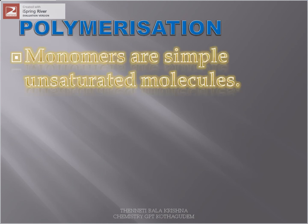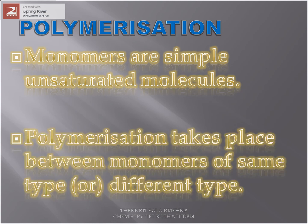The monomers are simply unsaturated molecules. Unsaturation means the compound contains a double bond between the atoms. Such a type of compound is called an unsaturated compound or unsaturated molecule. The formation takes place between the monomers of the same type or different types.